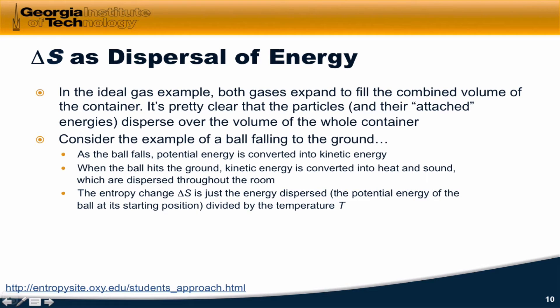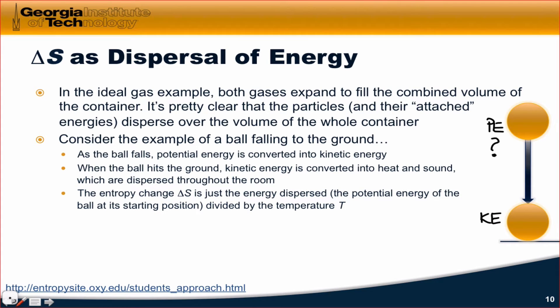But let's think about how other spontaneous processes also involve increases in entropy. Consider the example of a ball falling to the ground. As we mentioned before, as the ball falls, its kinetic energy is converted into potential energy. And so initially, when the ball is not moving, it has some quantity of potential energy. At the moment before it strikes the ground, all of that potential energy has been converted into kinetic energy. But of course, eventually, after maybe some bouncing, the ball comes to rest on the ground. So what happened then to the potential energy that the ball had when it was above the ground, and the kinetic energy that it had the moment before it struck the ground? Where did that energy go?